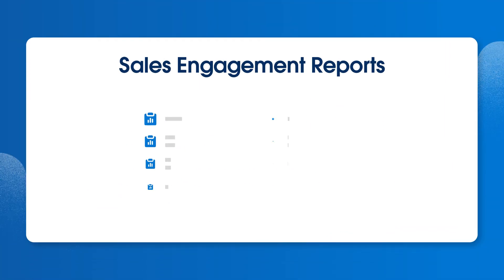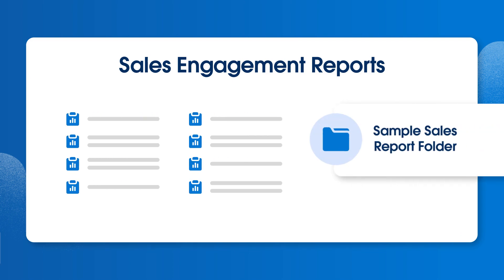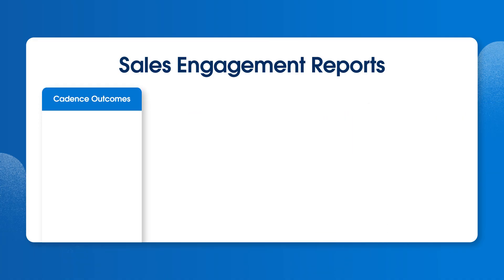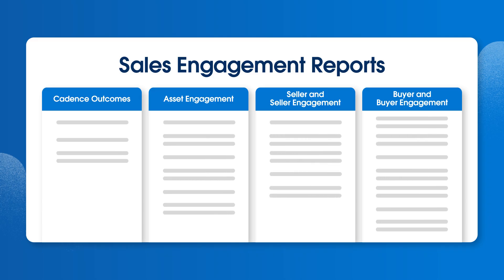Sales engagement comes with a number of custom report types you can use as a template for your own reports. You can find sample reports based on these report types in the sample sales reports folder, or you can use these report types or templates to create brand new reports in the report tab. There are four main types of reports that come pre-configured with sales engagement, each with its own subset of reports, which you can view in your org.